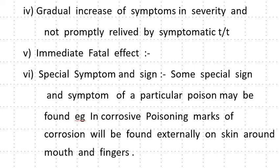Immediate fatal effect may also occur. Special symptoms and signs — some special signs and symptoms of a particular poison may be found. For example, in corrosive poisoning, marks of corrosion will be found externally on the skin around the mouth and fingers — they are corroded.